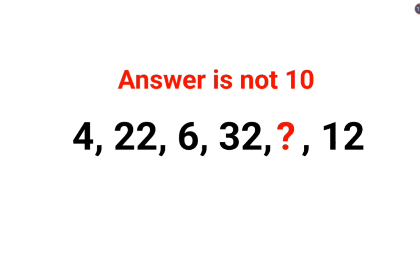Let me tell you the options. Option A was 4, option B was 2, option C was 6, and option D was 12. Out of these you had to pick one.